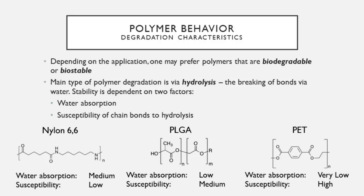PLGA — polylactic-co-glycolic acid — is made up of hydrophilic glycolic monomers and hydrophobic lactic acid monomers. Most 50-50 random mixtures of PLGA have relatively low water absorption rates, but their susceptibility to hydrolysis is relatively high, so they're considered biodegradable over a patient's lifetime. PLA can last a few years, while PGA — made only of the more hydrophilic glycolic acid monomer — degrades very rapidly, making it useful in sutures or other applications where fast degradation is desired.